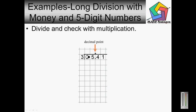Three goes into two? Three does not go into two, so you can put a zero here. Three goes into twenty-five — how many times? The closest would be eight. Three times eight is twenty-four. Twenty-five minus twenty-four is going to give me one.